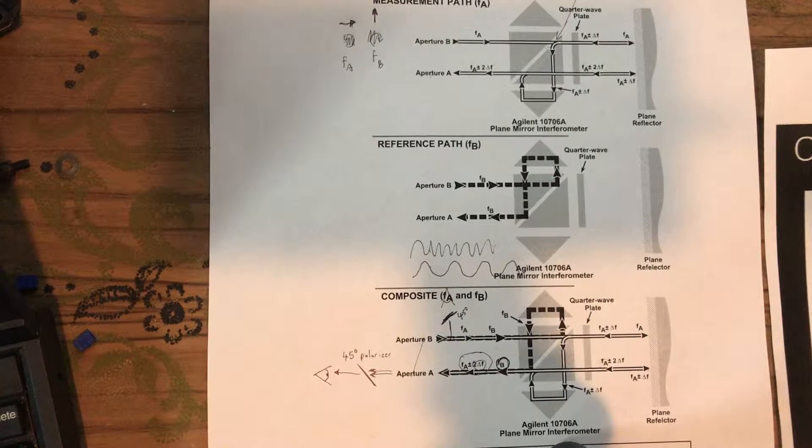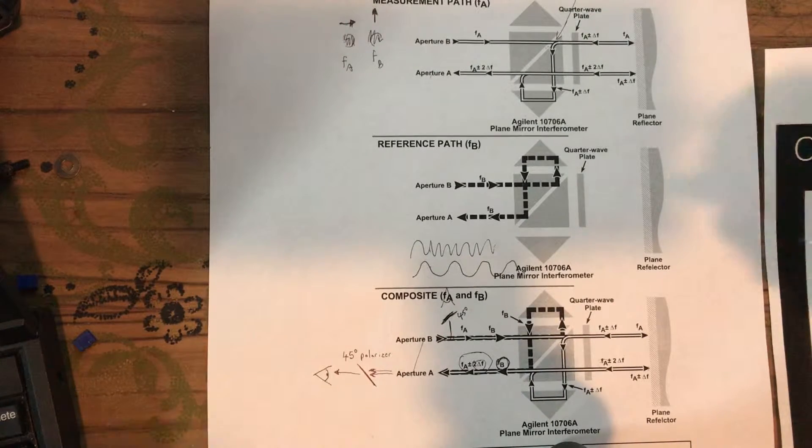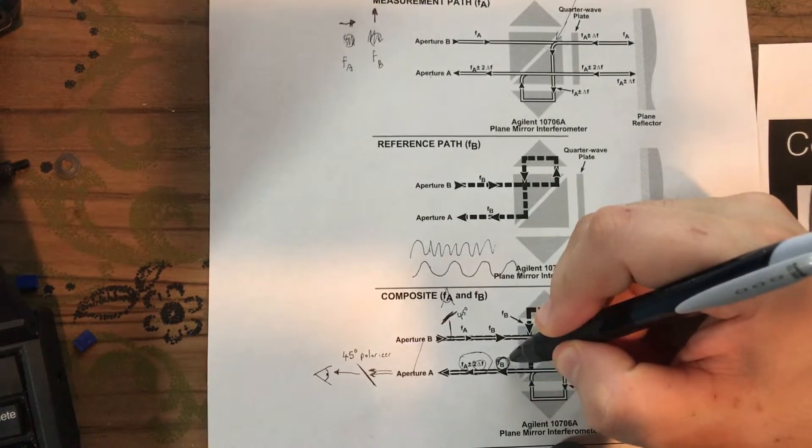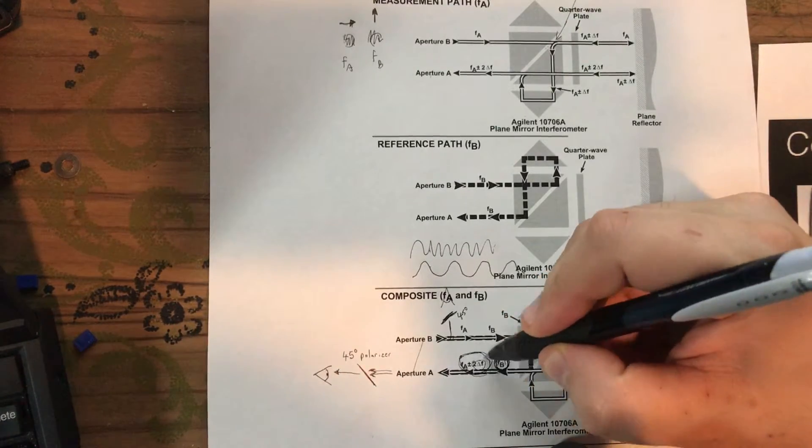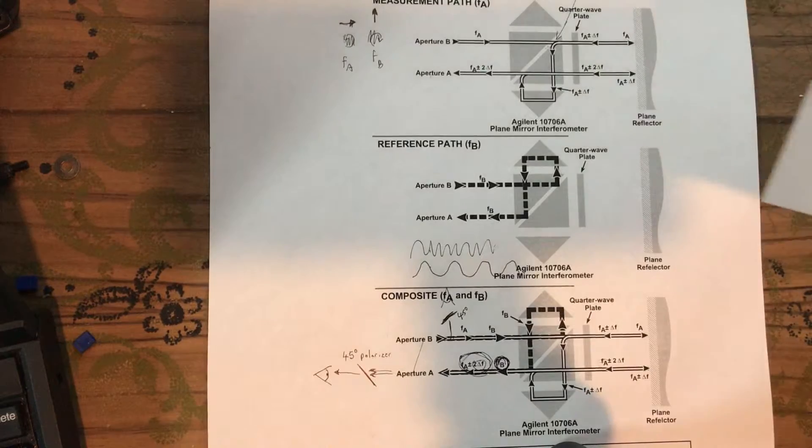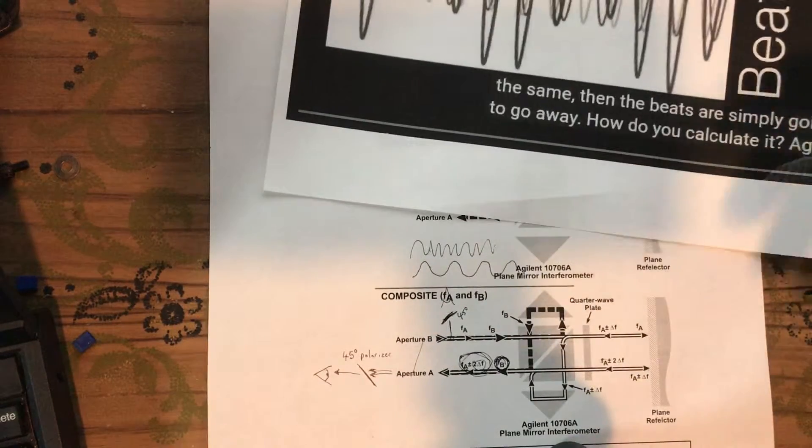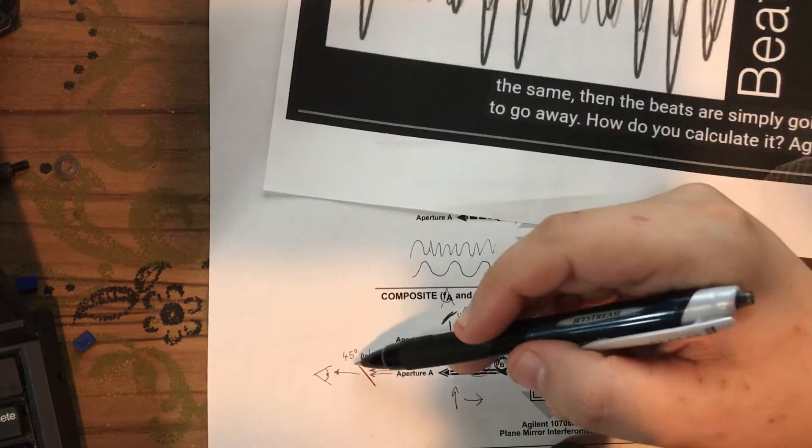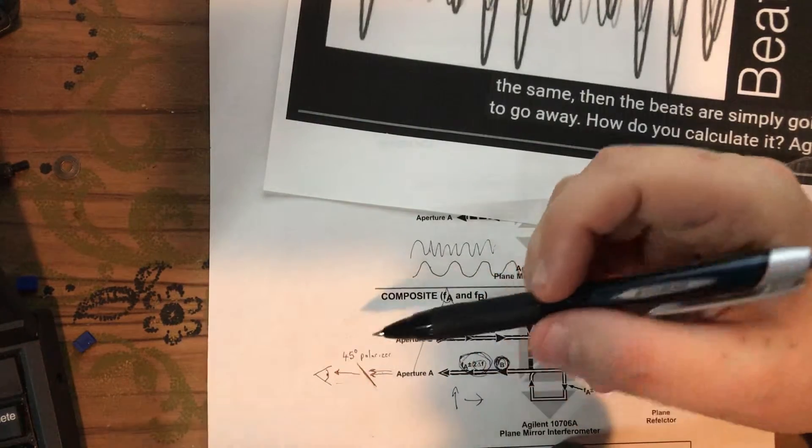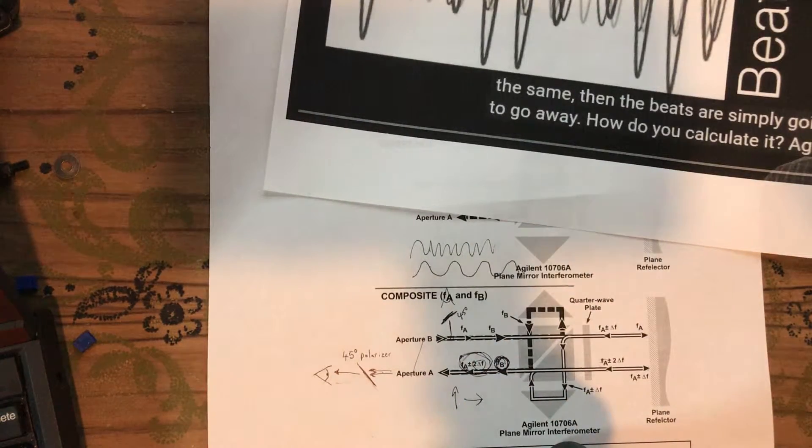But what we can do is measure how they interfere with each other. So we can measure the interference between the original lower frequency signal and this doppler shifted higher frequency signal. We do that through a beat frequency. When these are coming out they're still in opposite polarizations. They go through this 45 degree polarizer inside the receiver that squishes them down so they're the same polarization and allows them to interfere with each other.